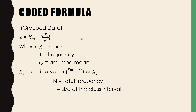The coded formula for grouped data is: x̄ = xm + (Σfxc / n) × i. Where x̄ is the mean, f is the frequency, xc is the coded value — which is computed as (class mark minus the assumed mean) divided by i — n is the total frequency, and i is the size of the class interval.